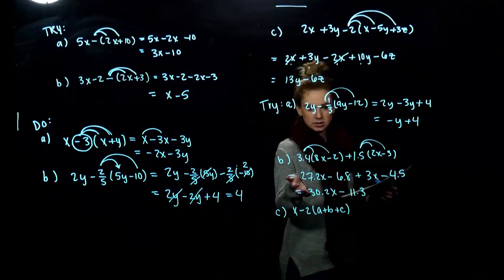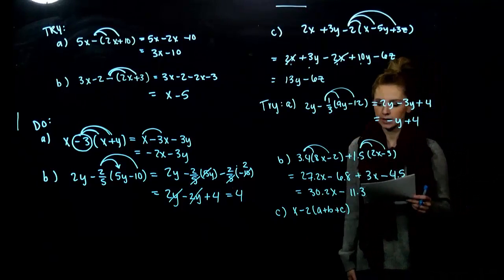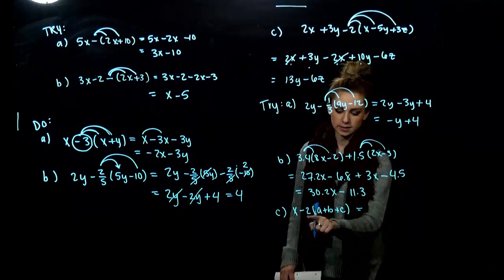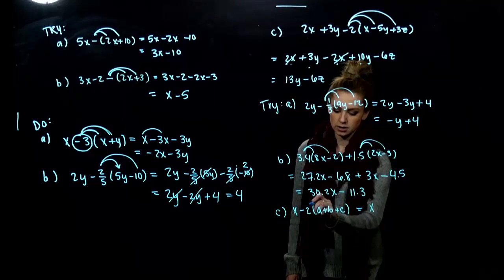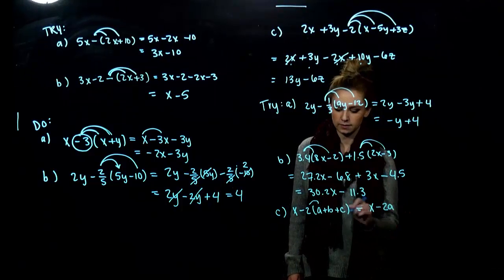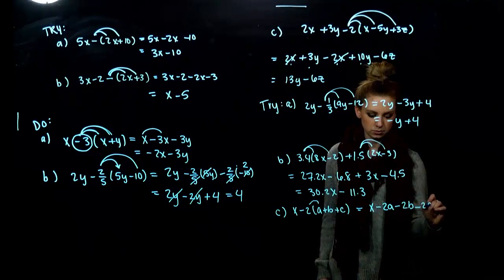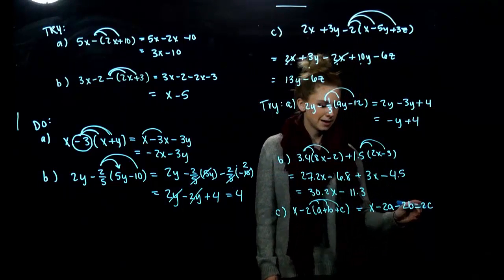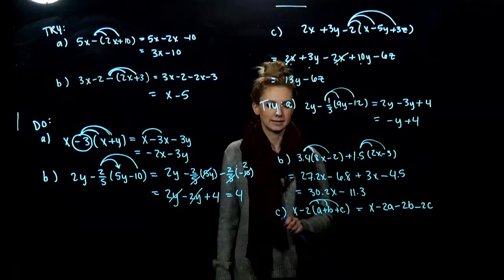The concept is still the same — if we have a fraction out front or a decimal, you still distribute to get rid of those parentheses. For the last one, the parentheses do matter because we have minus 2 out front. So x is unchanged; negative 2 times a gives minus 2a; minus 2b; minus 2c — distributing to each term. Can we combine any of those? They're not like terms, so it is finished as it stands: x minus 2a minus 2b minus 2c.